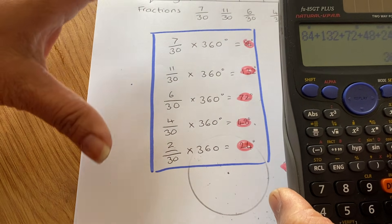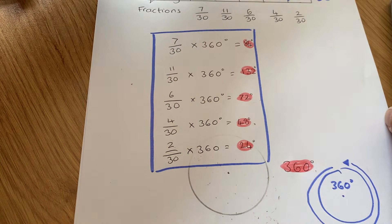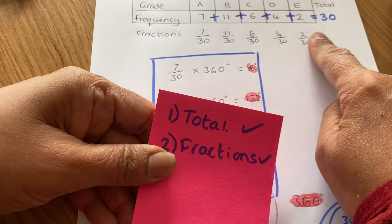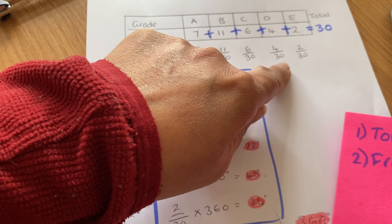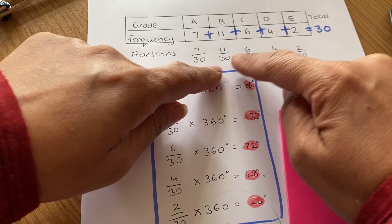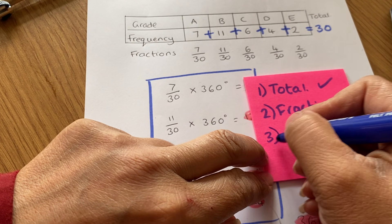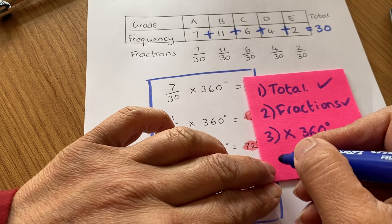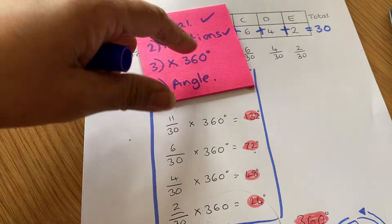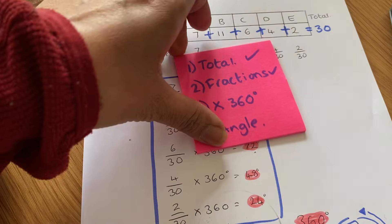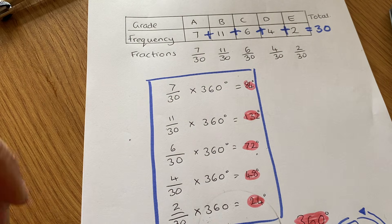So the first step was to find the total. The second step was to find the fractions — we put the total at the bottom, so 30 and 30. Then the third step was to multiply by 360 degrees. And the fourth step is to get your angle. So now we have our angles and we can measure. Those are our four golden steps. Now we're going to start constructing using our angles.